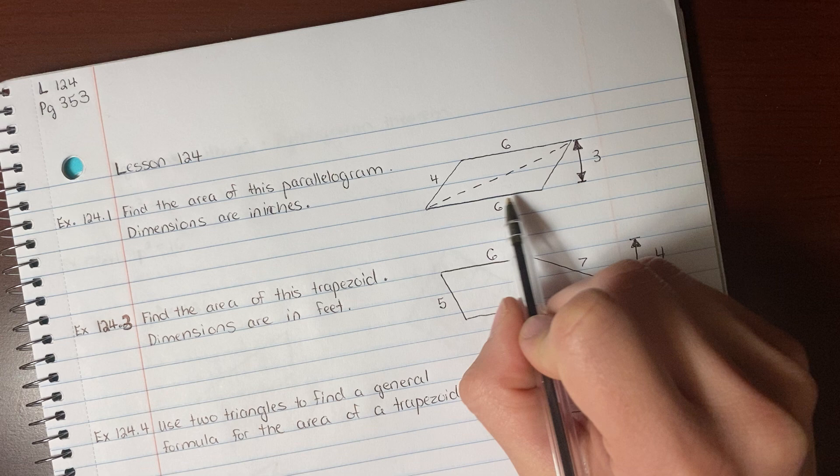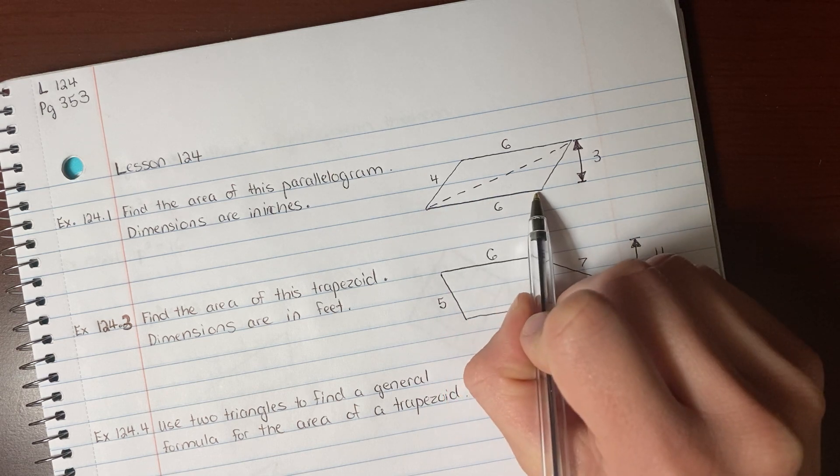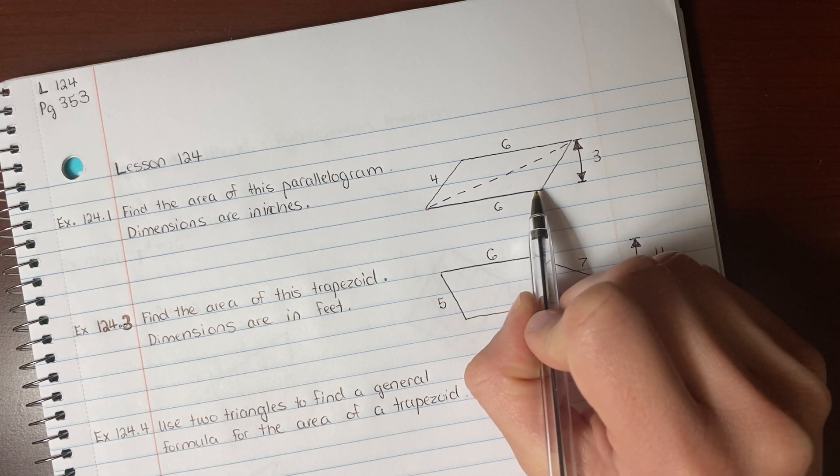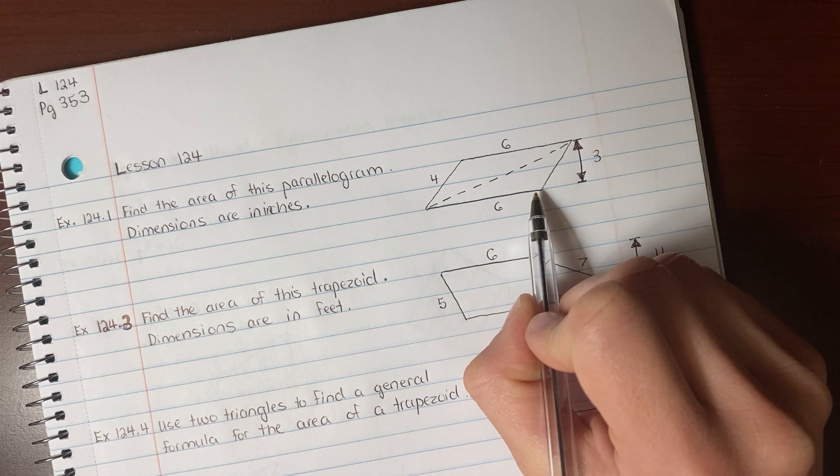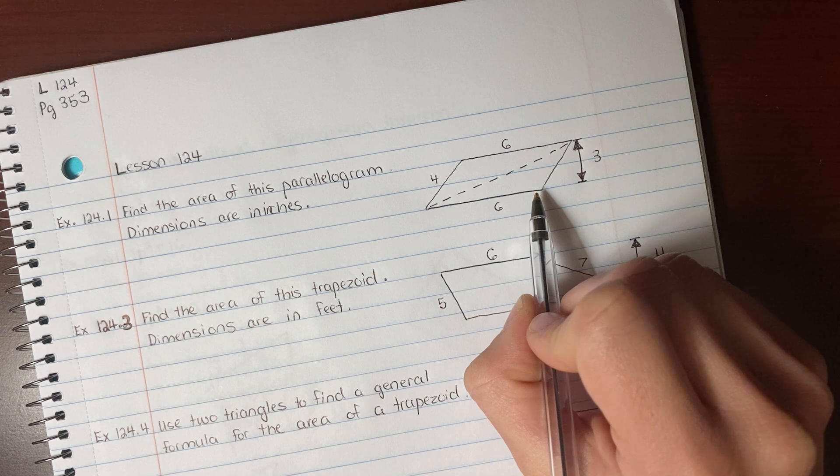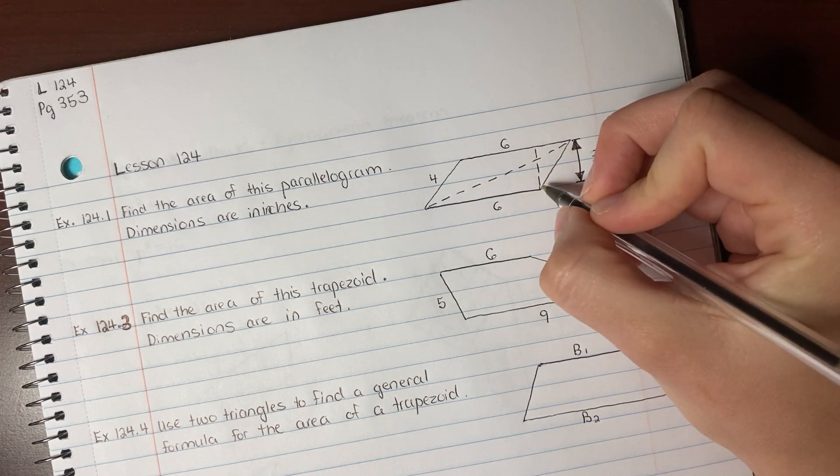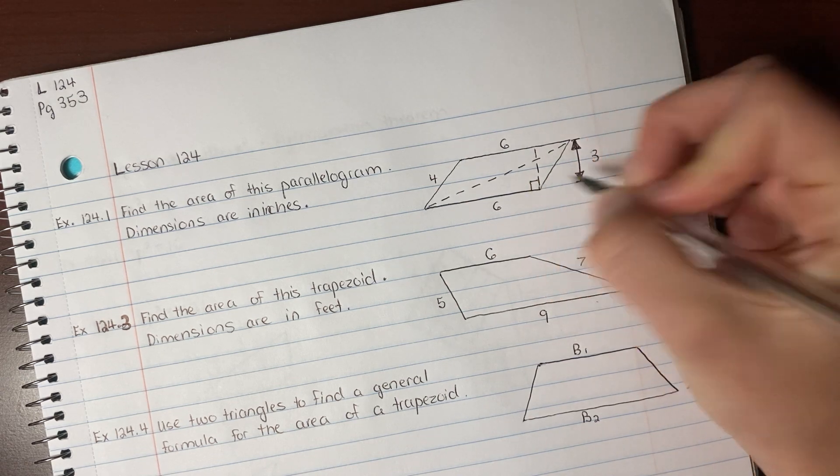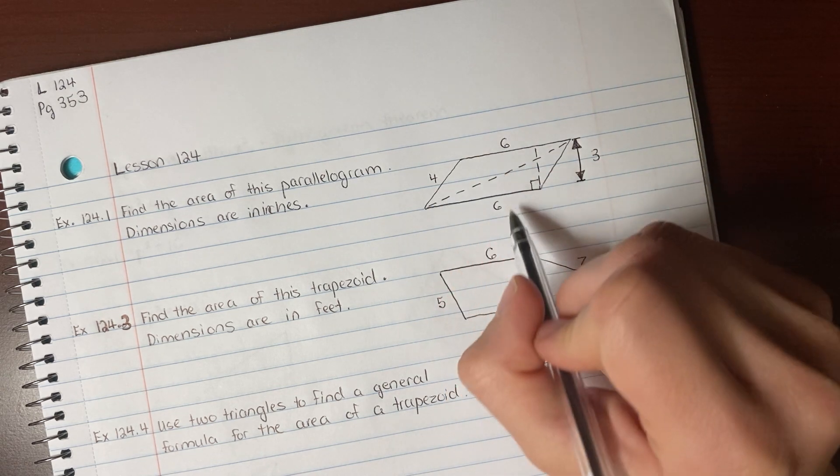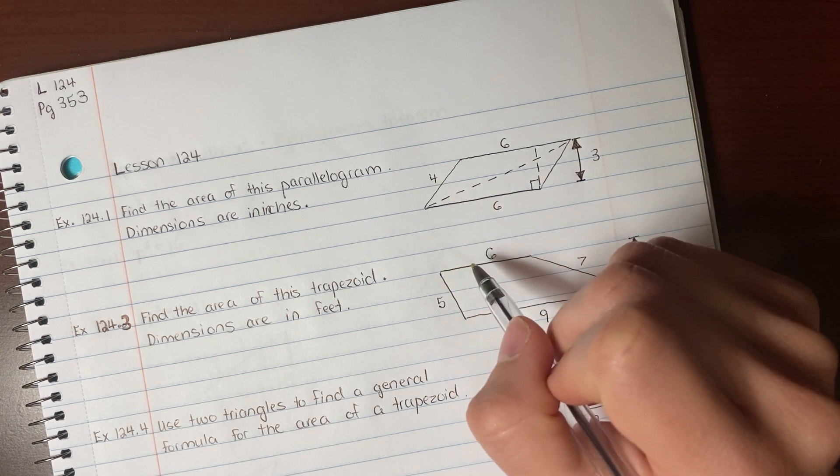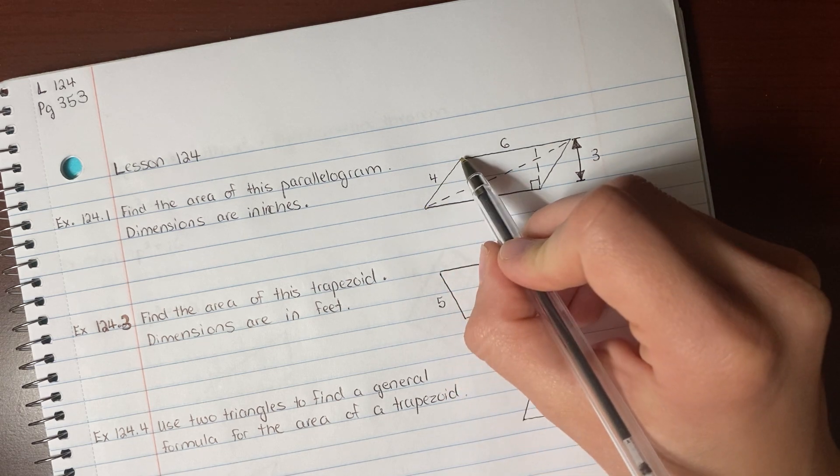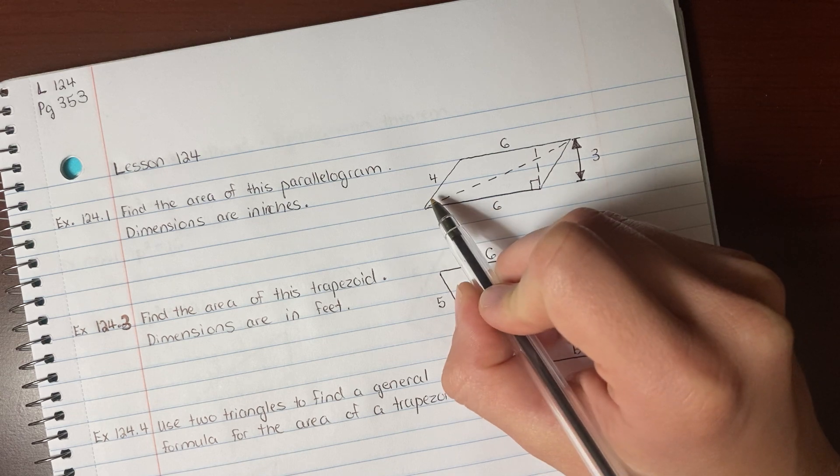So for this bottom triangle, our base is 6. What's our height? Hopefully you remember that the height has to be perpendicular to the base, which means whatever the height is, it must form a right angle. So the height is not 4. If you did 6 times 4 divided by 2, you would be wrong. 4 is not perpendicular to this base. That is not a right angle.